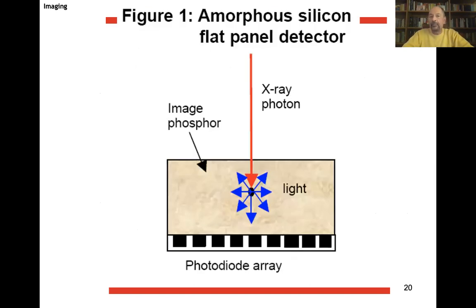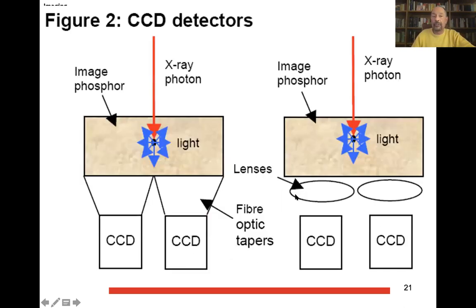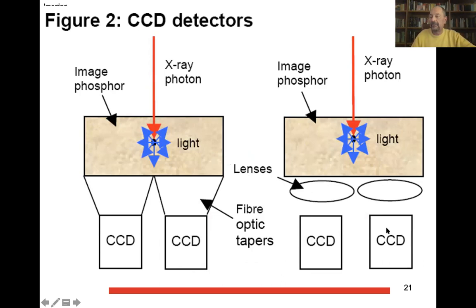Here is how the amorphous silicon flat panel detector effectively works. You have an x-ray photon, a phosphor that converts the photon energy into light, and then a photodiode array that collects the light. The light is then detected with CCD detectors, either via fiber optics from the phosphor to the CCD, or using lenses which also give the possibility to zoom on the image.